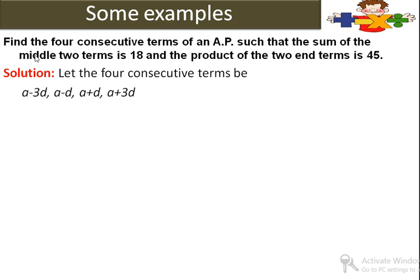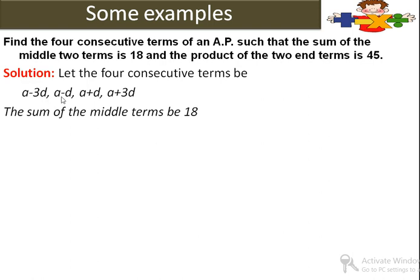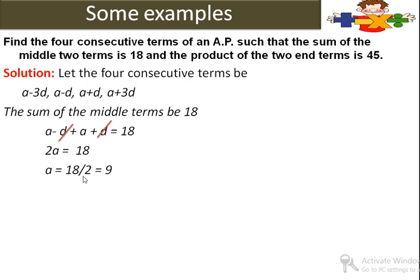पहला condition: the sum of the middle terms is 18. Middle terms हैं a minus d और a plus d. तो a minus d plus a plus d equals 18. यहां d minus का है और d plus का है — दोनों cancel हो जाएंगे. We get 2a equals 18, and a equals 9.